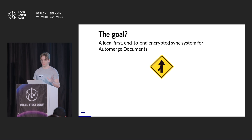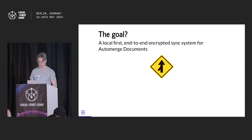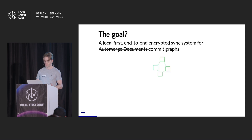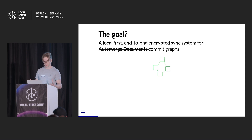What we're trying to build is a local-first end-to-end encrypted sync system for automerge documents. Because it's end-to-end encrypted, it doesn't really care about the contents of what it's syncing — so it's really anything shaped like a commit graph, which is what automerge is. Hopefully it can be quite general.